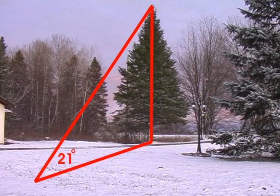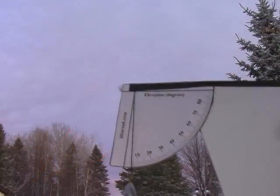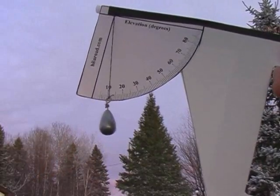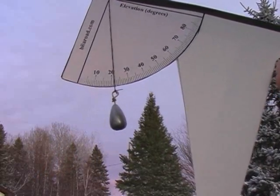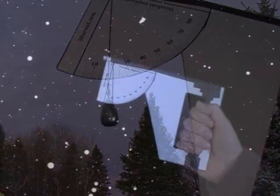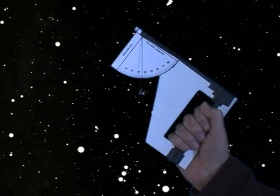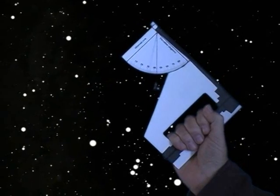We have created two videos demonstrating how to use this device to determine the height of tall objects like trees and buildings, and another video explaining how to use this device to find the altitude or elevation of stars and other objects in space. It is also possible to determine your latitude by sighting Polaris.